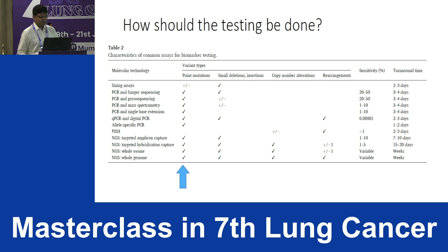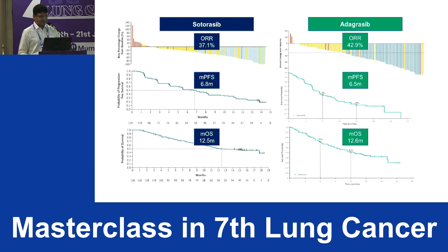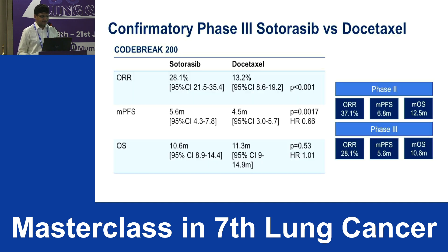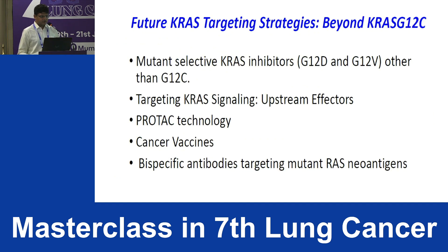It is important to know concomitant mutations when seeing a KRAS mutant patient. Testing should use NGS. We are discussing KRAS G12C because of drugs showing good response rates and progression-free survival, although the Phase 3 trial CodeBREAK 200 showed overall survival results that were not very exciting.